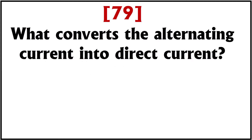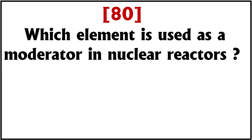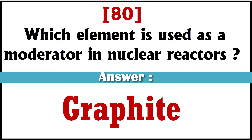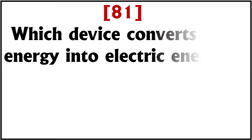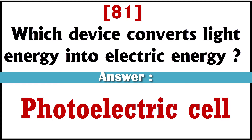What converts alternating current into direct current? Answer: Rectifier. Which element is used as a moderator in nuclear reactors? Answer: Graphite. Which device converts light energy into electric energy? Answer: Photoelectric cell.